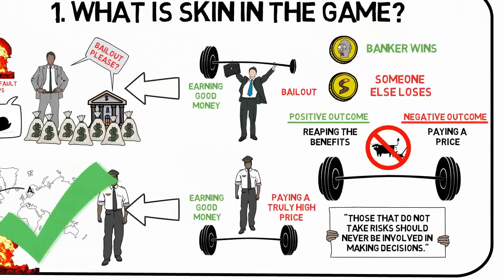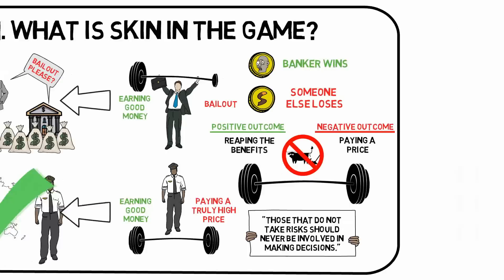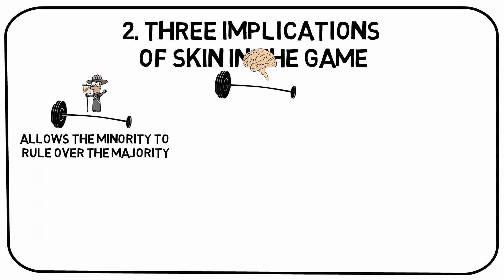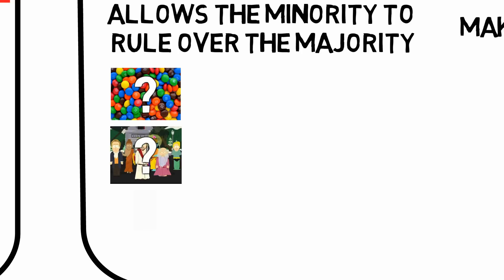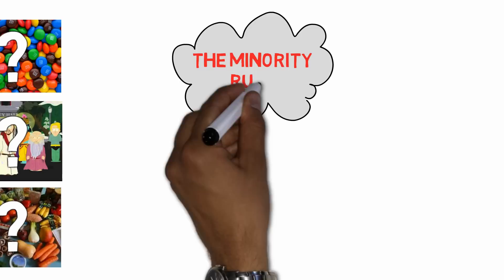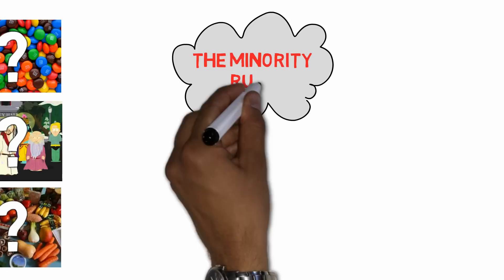Now let's get into three perhaps less obvious implications that skin in the game has in our everyday life. Takeaway number two: three implications of skin in the game. I will present how skin in the game allows the minority to rule over the majority, how it makes you smarter, and why it turns employees into obedient dogs. Have you ever thought about why peanuts are not allowed on airplanes? Why TV series sometimes end up getting a ban because of some ethnic slur? Or why certain dietary advice, such as veganism, has had such an impact? It's all due to the minority rule, which in turn comes from skin in the game.